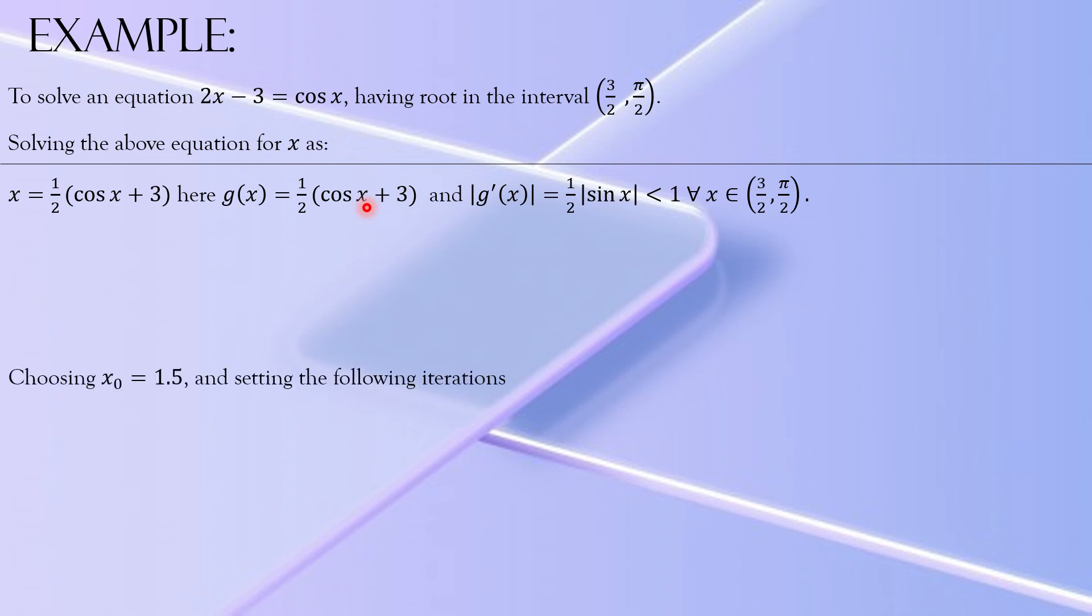It means if you set up the iterations, the iterations will be converging to a specific root of this equation. So let's suppose we choose x₀ = 1.5. You can take any number in this interval 3/2 to π/2.